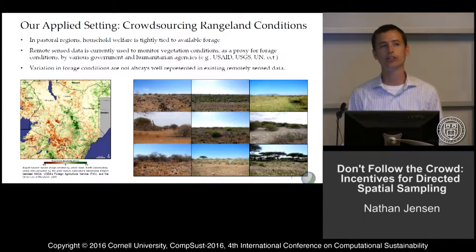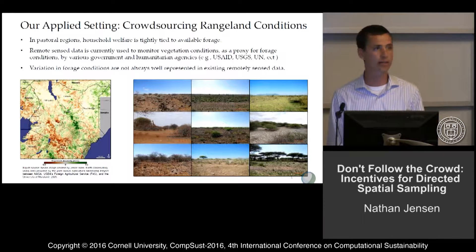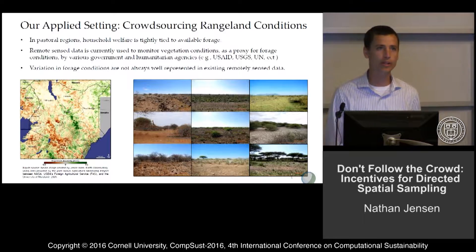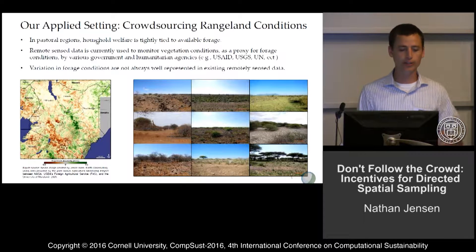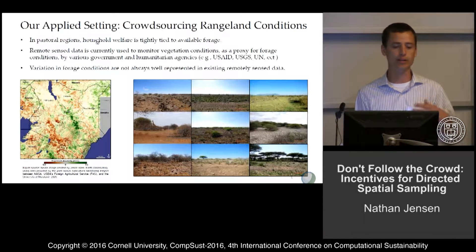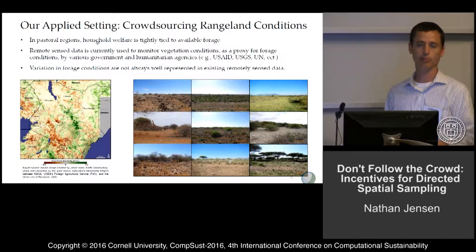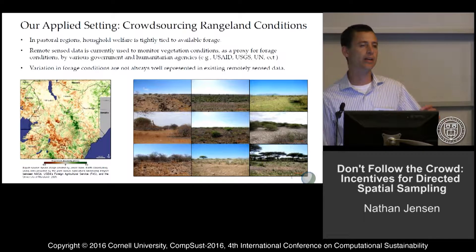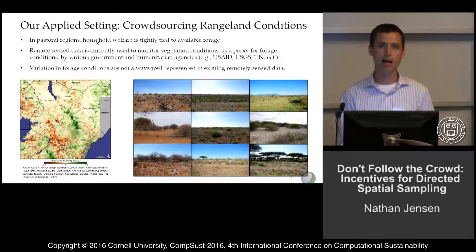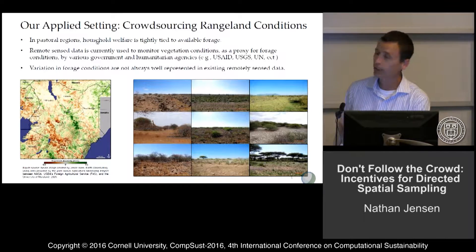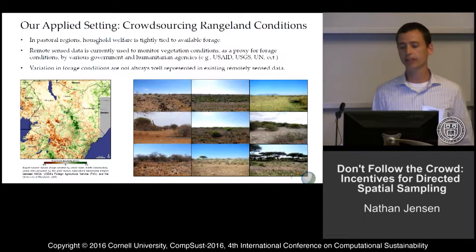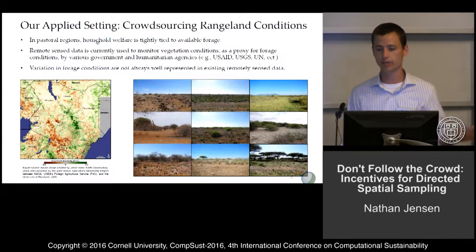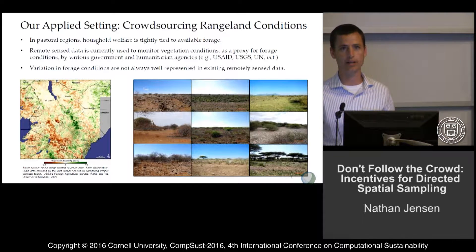Because of that, humanitarian agencies have begun tracking forage conditions using remotely sensed data, and this works quite well. You can see on the map on the left-hand side — this is Kenya with NDVI data showing vegetation greenness relative to historical means. Areas that are green are greener than normal for that season; areas that are brown are drier than normal. This works well to identify droughts, but what it misses is that not all vegetation is useful for pastoralists — some is palatable and some is not. Looking at the pictures on the right, if you're herding cattle, they can only eat grass. So a green area full of shrubs shows up in NDVI but holds no value for the pastoralist.